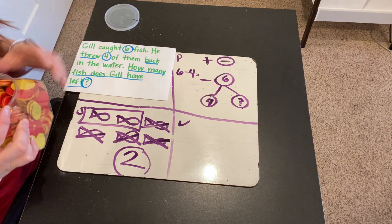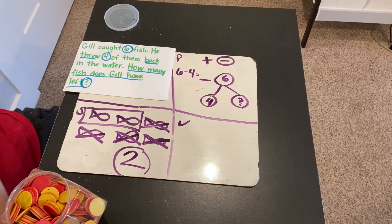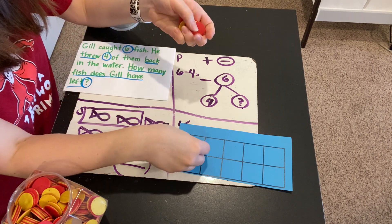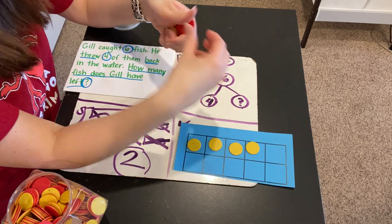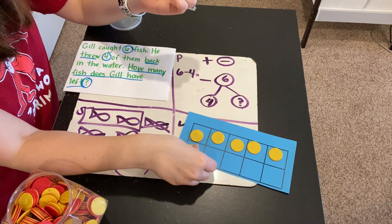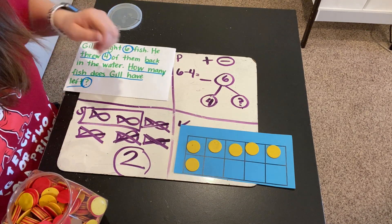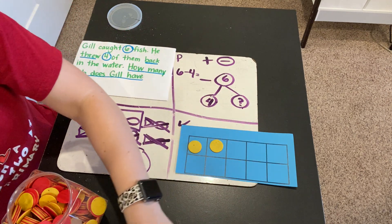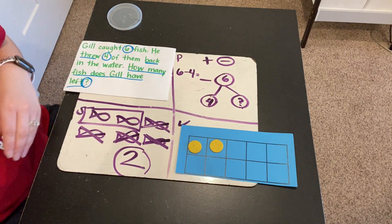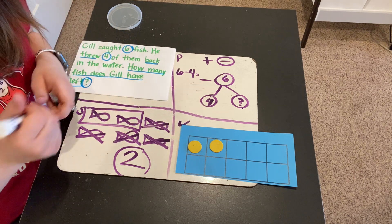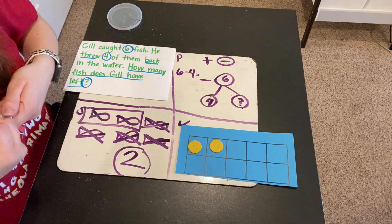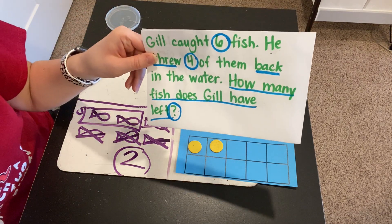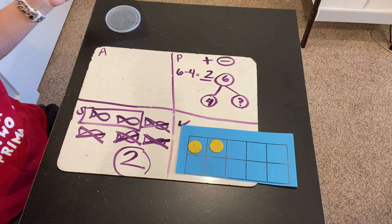Let me grab my counters and my ten frame. First, I need to show the six fish that Gil caught: one, two, three, four, five, six. Gil had six fish. And then he threw four of them back: one, two, three, four. How many fish does Gil have left? One, two. He has two left. So both times we solved this problem, we got the answer of two. Six minus four must be two. How many fish does Gil have left? He has two fish.